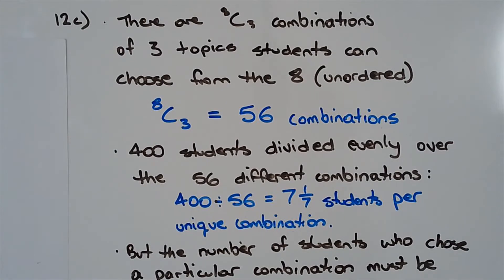Firstly, we'll consider the number of ways a student can choose three topics from the eight. This is an unordered selection, so we'll use combinations to determine this. Eight choose three is equal to 56 combinations, so there are 56 different ways a student can choose three topics from the eight.